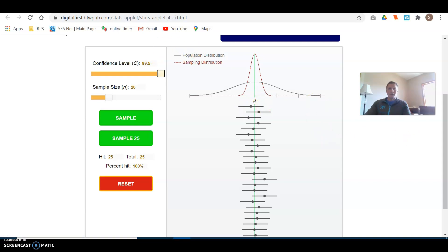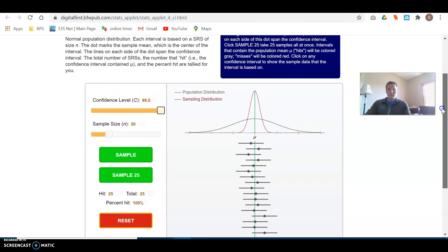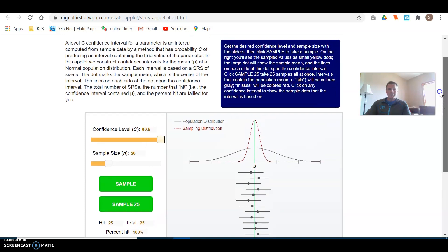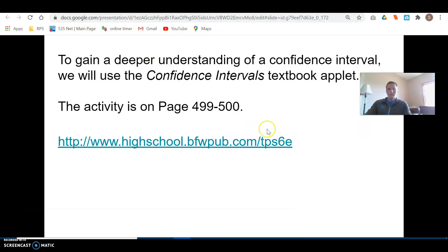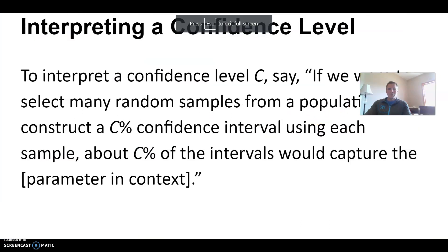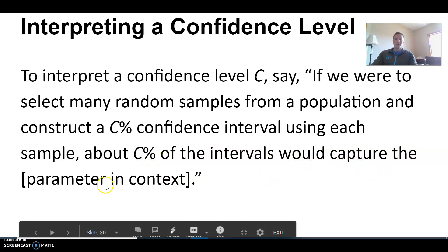So we'll look more at what affects the length of the interval because there are other factors. But let's continue. The interpretation of the confidence level is: if we were to select many random samples from a population and construct a C% confidence interval using each sample, about C% of the intervals would capture the true population parameter, which you would put in context.